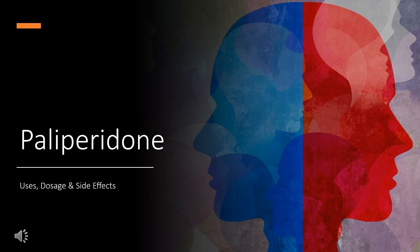Palliperidone is an atypical antipsychotic used in the treatment of schizophrenia and other schizoaffective or delusional disorders. In this video, we will cover: What is palliperidone? What class of drug is palliperidone? What is palliperidone used to treat? Who cannot use palliperidone? What are the side effects of taking palliperidone? How does palliperidone make you feel? How to use palliperidone?